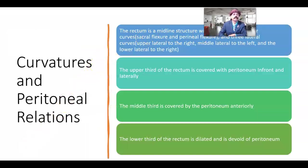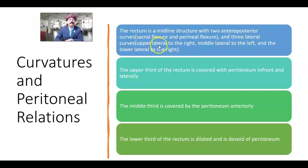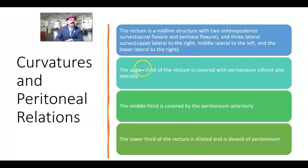Curvature and peritoneal relations: the rectum is a midline structure with two anteroposterior curves — the sacral flexure at the beginning and the perineal flexure at the end where there is the anorectal ring. There are also three lateral curvatures: upper lateral convex to the right, middle lateral convex to the left, and lower lateral convex to the right.